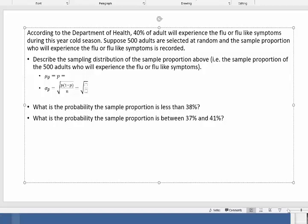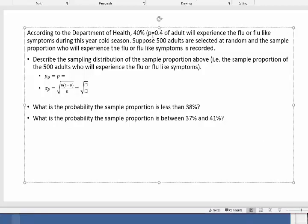According to the Department of Health, 40% of adults will experience the flu or flu-like symptoms during the cold season. So the population proportion is 40% each year. Now suppose 500 adults are selected at random and the sample proportion who will experience the flu or flu-like symptoms is recorded.